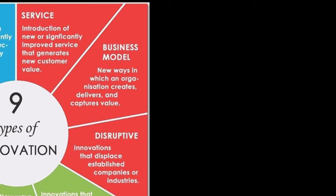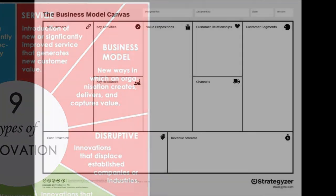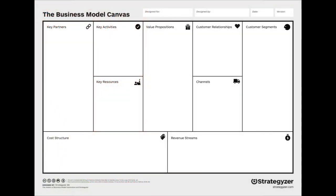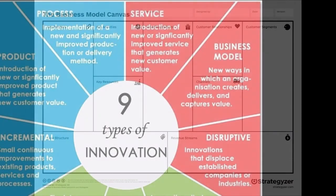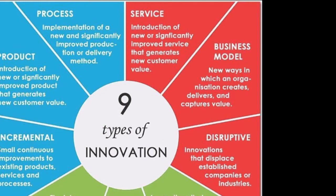We can have innovation that replaces existing companies or industries. The well-known example is that more or less all the other businesses doing phones were displaced when mobile phones appeared. There is also an introduction to the business model canvas, which is part of developing the business model and seeing how business models can be utilized as an important part of innovation in a business.